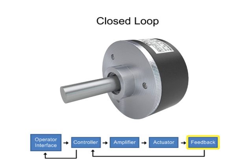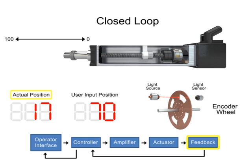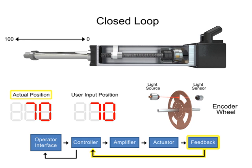The feedback device, usually an encoder or position sensing device, recognizes the motor position and reports the result back to the controller. As the encoder rotates, position and speed information are relayed to the controller and compared to the user input.